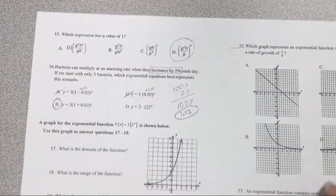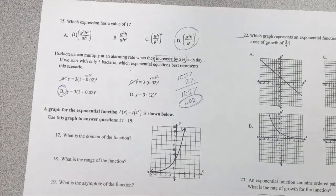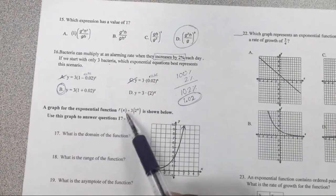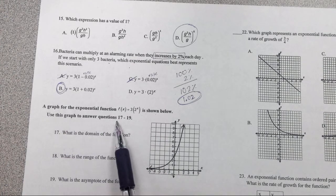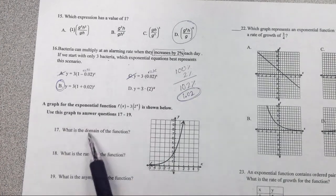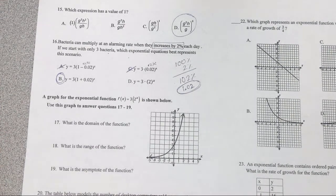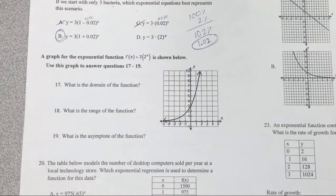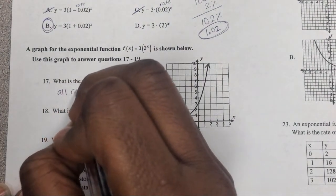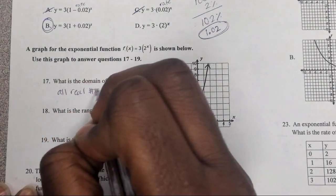So this says a graph for the exponential function of this is shown below. Use this graph to answer questions 17, 18, and 19. So they already give you a graph and they give you the equation. You should be happy. Domain is all real numbers.